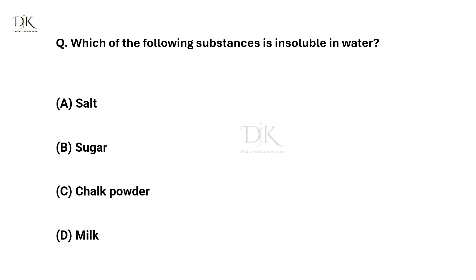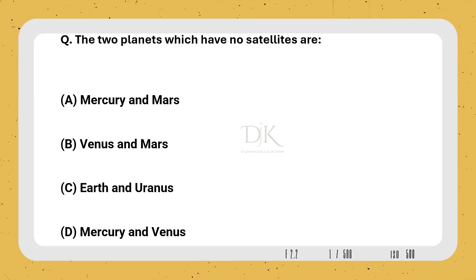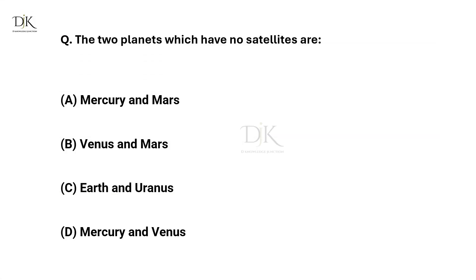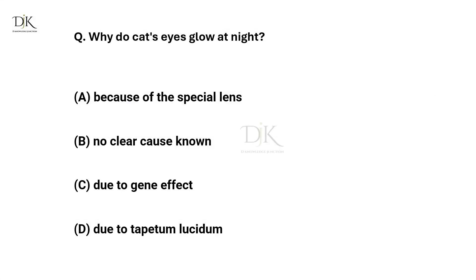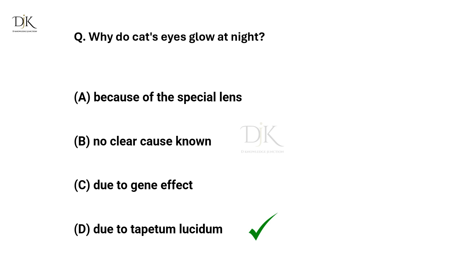Which of the following substances is insoluble in water? The right answer is Chalk powder. The two planets which have no satellites are? The right answer is Mercury and Venus. Why do cats' eyes glow at night? The right answer is due to Tapetum lucidum.